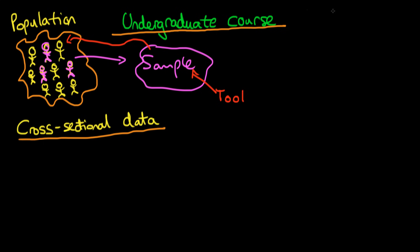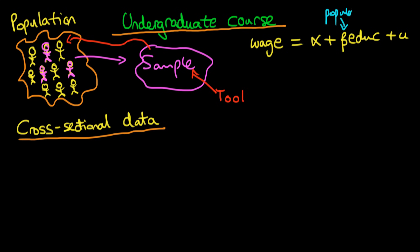So what exactly do I mean by estimating the population parameter? There might be a relationship between the level of wage which an individual obtains and their level of education, given by this relationship here which I've drawn mathematically. The coefficient beta might represent the effect of one extra year of education on an individual's average level of wages — that would be the average effect of one year of education on wages within the population. But since we only have a sample, we'd like to use our tool on the sample to estimate this parameter, in this case beta.